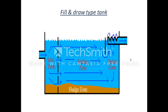The fill and draw type sedimentation tank, as shown in the figure, is usually rectangular in shape. Water is filled in the tank from the inlet valve and retained at rest for some time. The particles settle down at the bottom of the tank and clear water is obtained. The clear water is then removed from the outlet valve, and the sludge deposited at the bottom — visible as the sludge zone — is removed. Then the process is repeated.